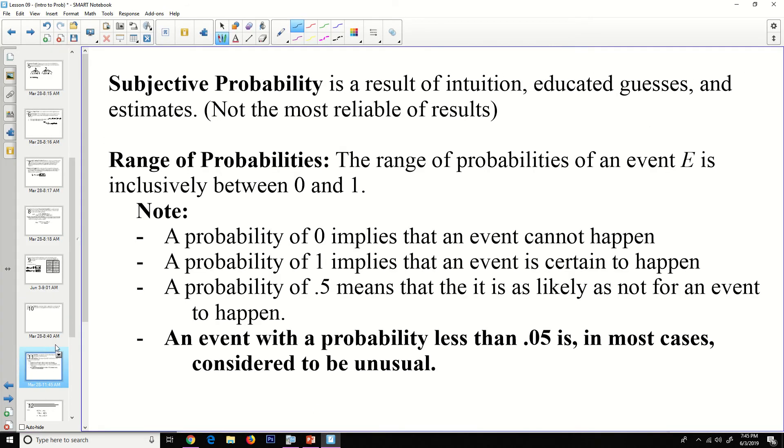Subjective probability is a result of intuition, educated guesses, or an estimate. This is usually not the most reliable of results. You kind of have to read the person who's giving you those results and determine whether they're reliable or not. Something like that would be a stock broker saying, I predict that IBM stocks are going to fall in 2019, and I think that I give it about a 75% chance of that happening. He's being subjective. He doesn't really have a whole lot to back that. So depending on how well you trust that particular stock broker tells you how much you should trust his subjective probability.